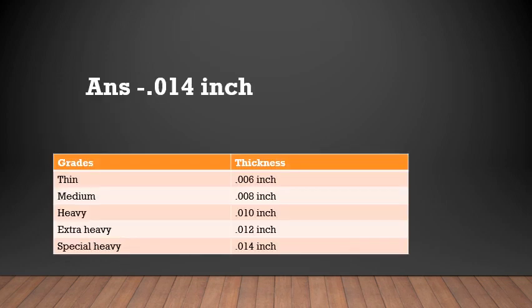The answer is 0.014 inch. The table shows different grades of rubber dam sheet and their thickness: thin rubber dam sheet is 0.006 inch, medium 0.008 inch, heavy 0.010 inch, extra heavy 0.012 inch, and special heavy 0.014 inch.